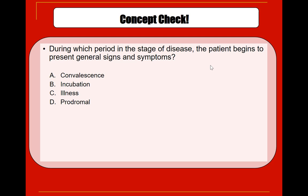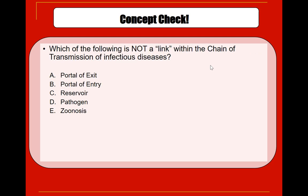Let's do some quick concept checks. During which period or stage of disease does the patient begin to present general signs and symptoms? The answer is D — prodromal. Which of the following is not a link within the chain of transmission of infectious diseases? The answer is E — zoonosis.